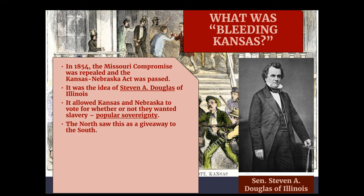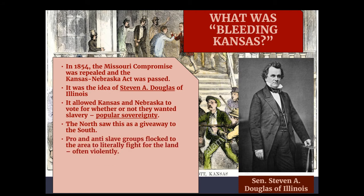The North saw this as a giveaway to the South, since a lot of these lands were north of the Mason-Dixon line. The North believed those lands should absolutely not be open to slavery. Pro- and anti-slavery groups both moved to the area to fight over the land, and some of those fights became quite violent. As a result, people became convinced this would not be resolved peacefully — that a civil war might be inevitable. Bleeding Kansas was the first canary in the coal mine.